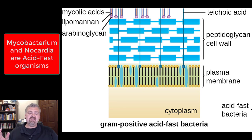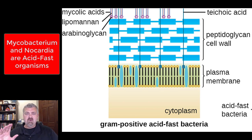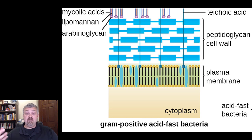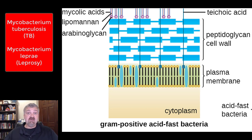The two examples we care about would be Mycobacterium, and then any pathogenic strains of Nocardia, but those are exceedingly rare. The Mycobacterium are what we care about mainly because of Mycobacterium tuberculosis, the causative agent of TB. You also have Mycobacterium leprae, which causes leprosy or Hansen's disease.